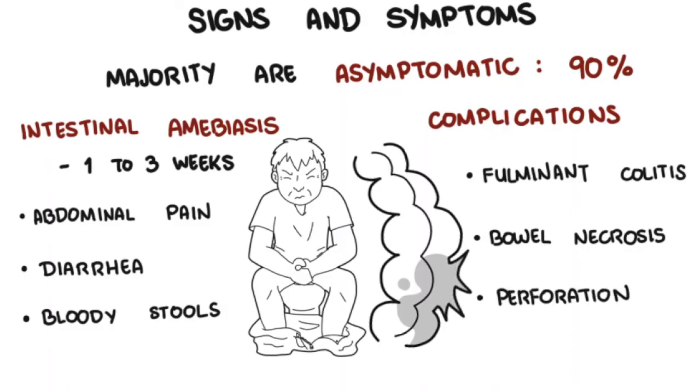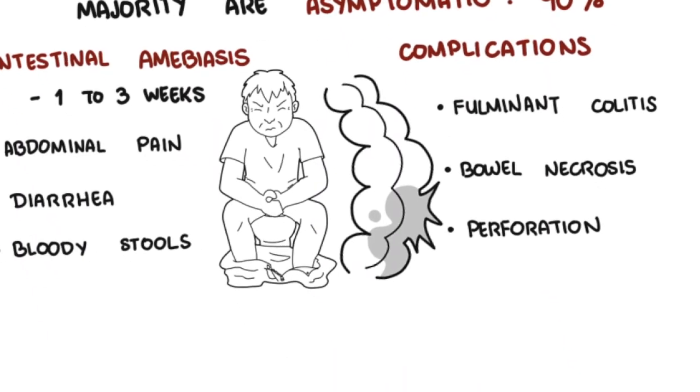Perforation of the colon will cause peritonitis with severe abdominal pain. Toxic megacolon can also occur, which is extreme dilatation and inflammation of the colon, the large bowel.